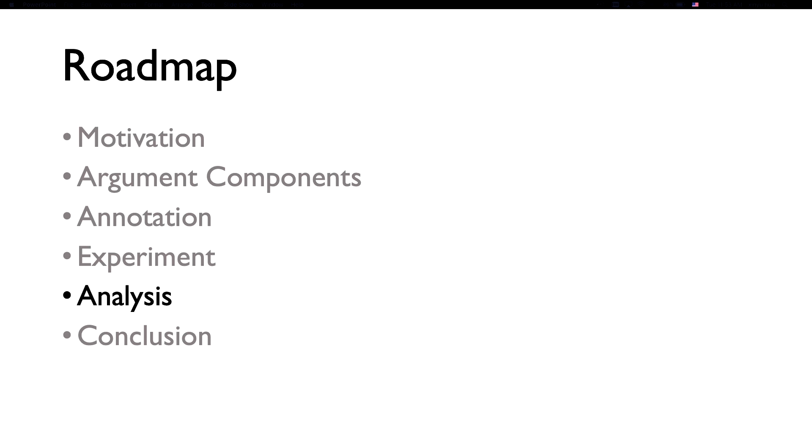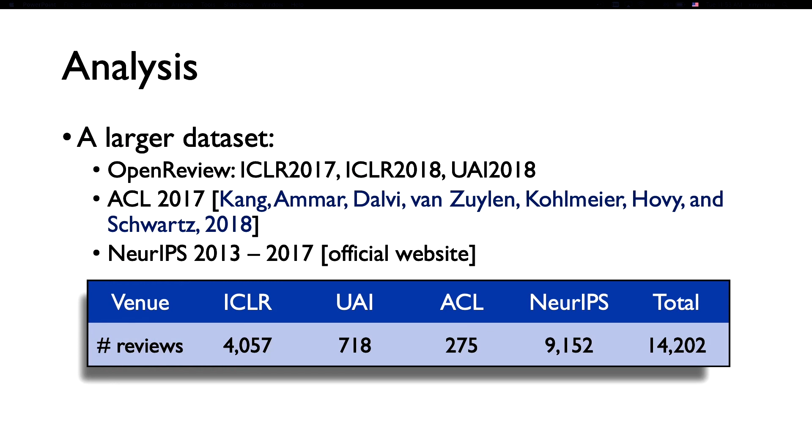With these models, we think it'll be interesting to apply to some larger dataset. So we collect more data from OpenReview, which includes the ICLR 17, 18, and UAI. Notice that the ICLR data is already publicly available online, whereas the UAI data we thank the OpenReview team, who was generous enough to provide us with the data. In addition, we also consider the ACL 17 review, collected from my previous work, and around 9,000 reviews from the NeurIPS website.